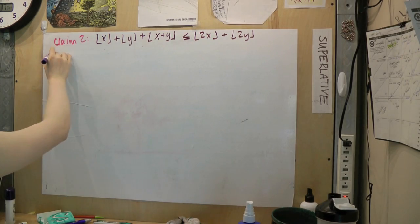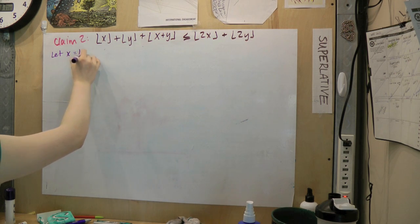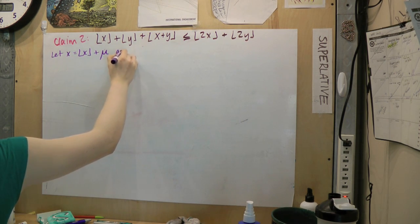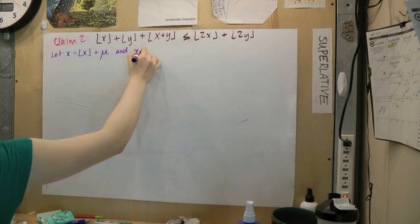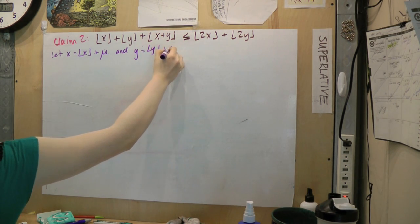So, now we've got this lovely claim. In order to generalize, we let x equal to x floor plus mu. This will account for every possible x-value. We do the same for y using a separate constant, epsilon.